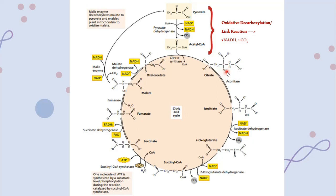Citrate is then converted into its isomer, isocitrate. The difference lies at the third carbon, where the OH group is rearranged — the hydroxyl group at the bottom is removed by hydrogen, and on the second carbon, a hydroxyl group is attached instead of hydrogen. Citrate is converted into isocitrate in the presence of the enzyme aconitase. This is a reversible reaction, so both citrate and isocitrate are interconvertible.